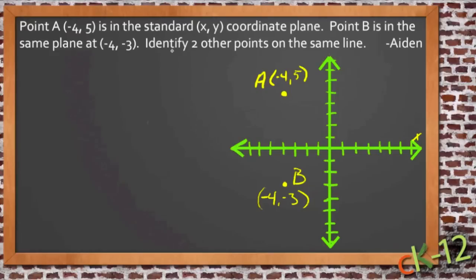He says he needs to identify two other points on the same line. Okay, so if we had to go left of the origin 1, 2, 3, 4 places for each of these, and then one of them was up 5 points and one of them was down 3 points, then obviously they must be on the same vertical line because they have the same horizontal location. They're both x equals negative 4.